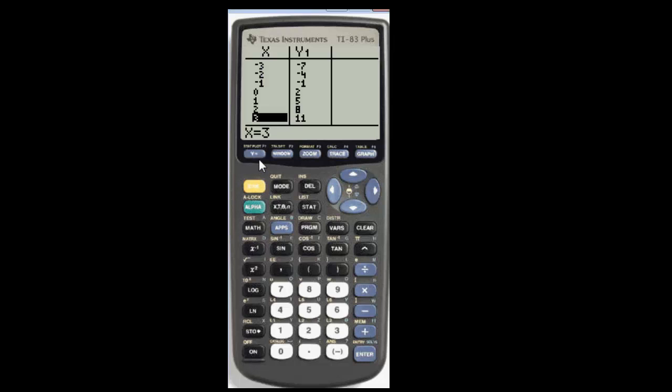And then I'm going to go to y equals and I'm going to hit the clear button to clear everything out that was there before. And then I'm going to type 3, this is the x button, x plus 2.